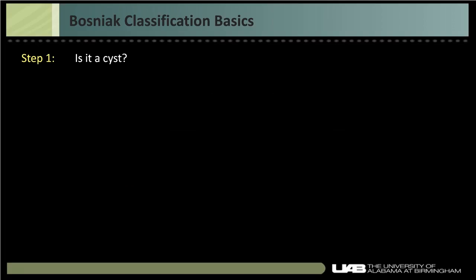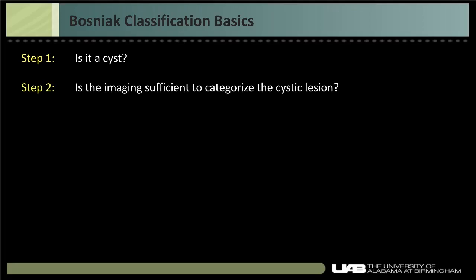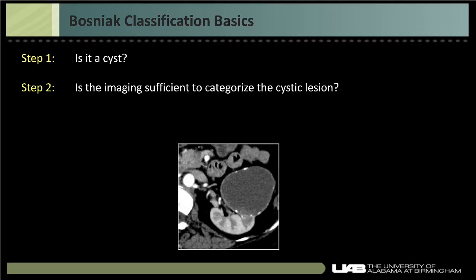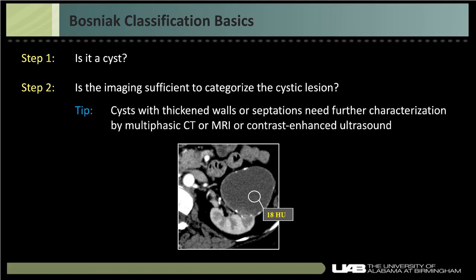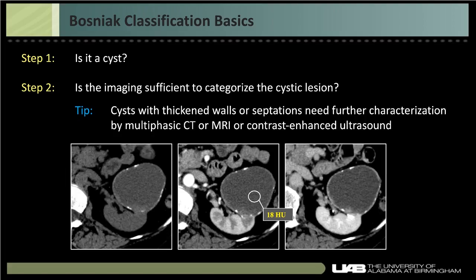Once we establish it's a cyst, the next question is: is the imaging sufficient to categorize the cystic lesion? If a cyst has thickened walls or septations needing further characterization, you need a multiphasic CT, MRI, or contrast-enhanced ultrasound. For example, if you see a single-phase CT with a cyst showing possible wall thickening, you can't determine if the walls are naturally hyperdense or enhancing without the full multiphasic study. The tip is: when you see a cyst with thickened walls or septations, recommend further characterization.